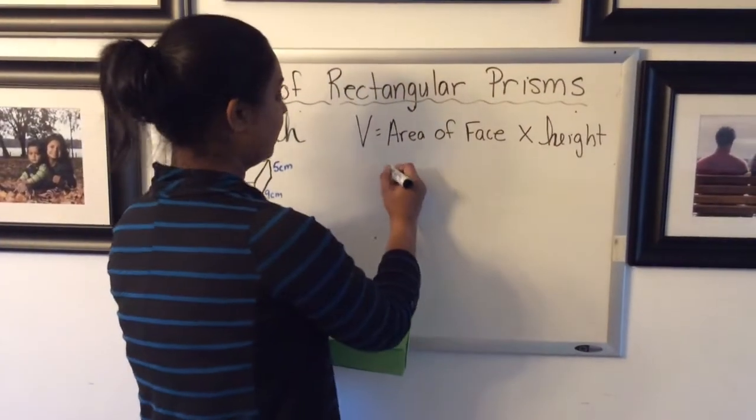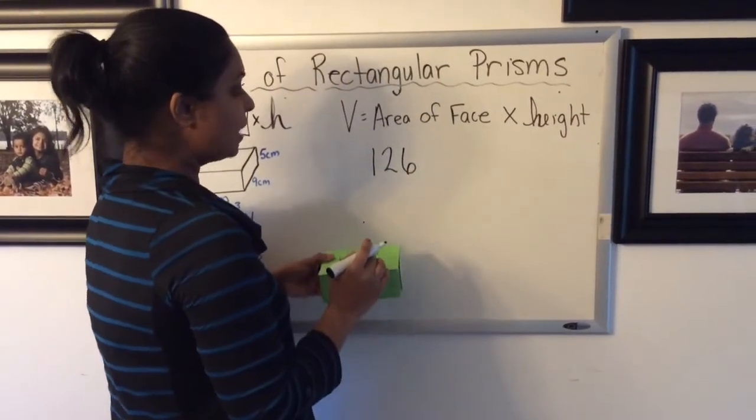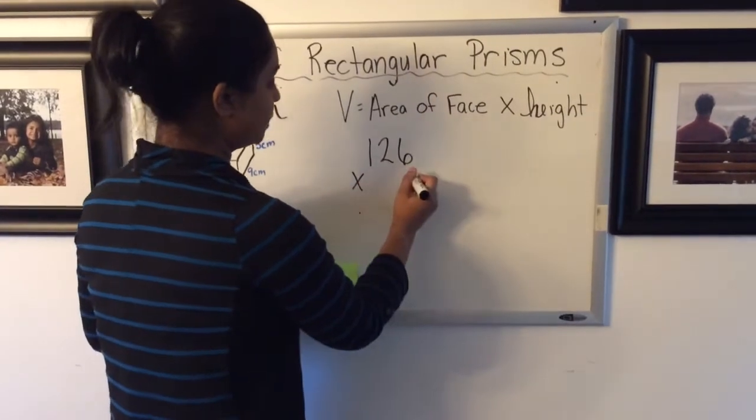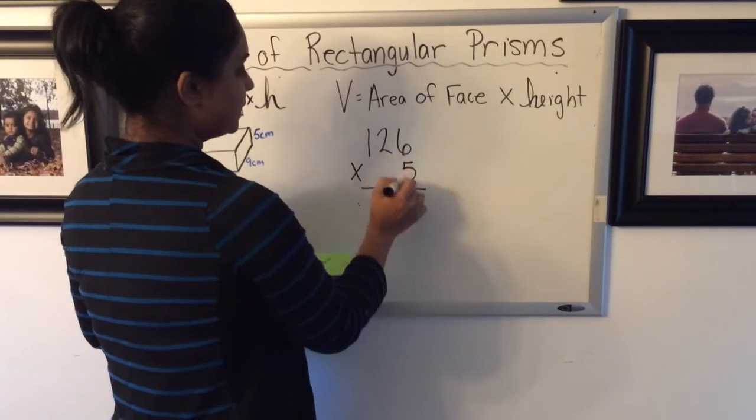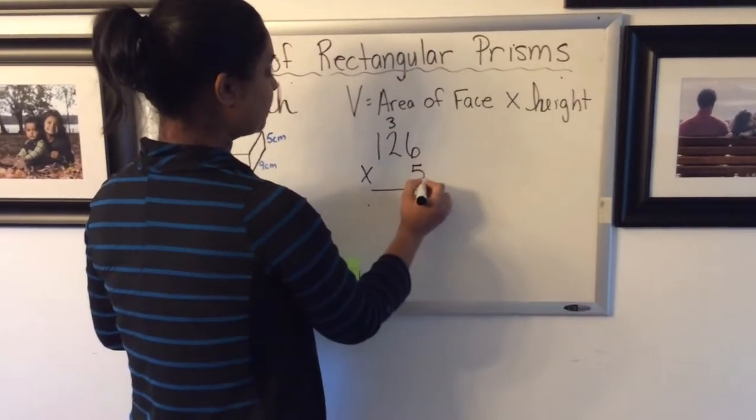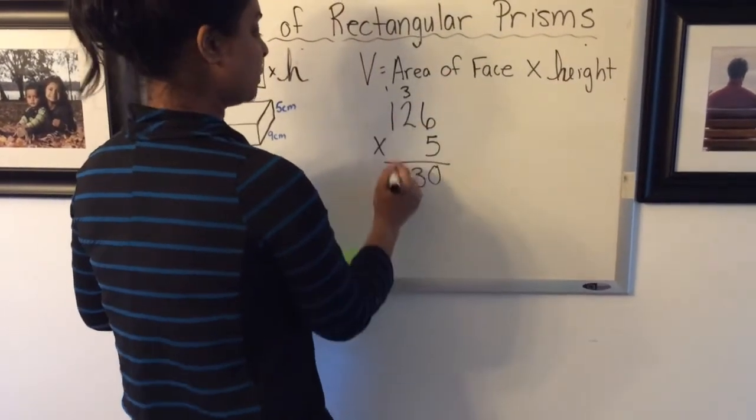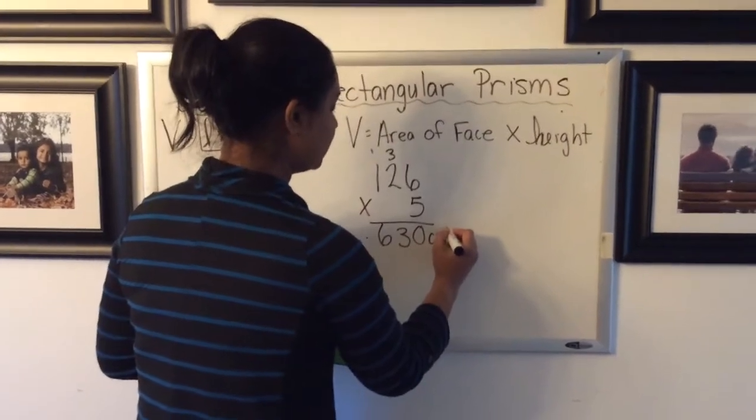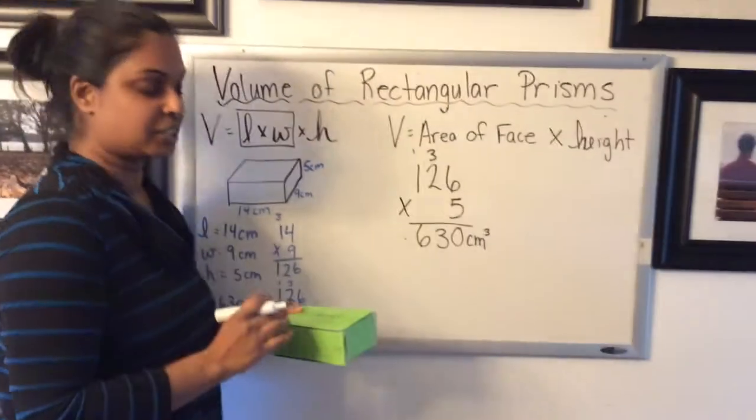So 126, and then multiply it by the height or the other measurement there that you have on your prism. So let's try this. So 6 times 5 is 30, 2 times 5 is 10 plus 3 more is 13, 1 times 5 is 5 plus 1 more is 6. And then again I get 630 centimeters cubed. So I got the same answer.